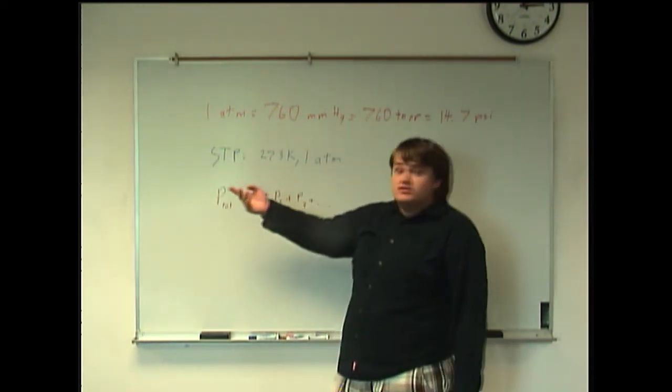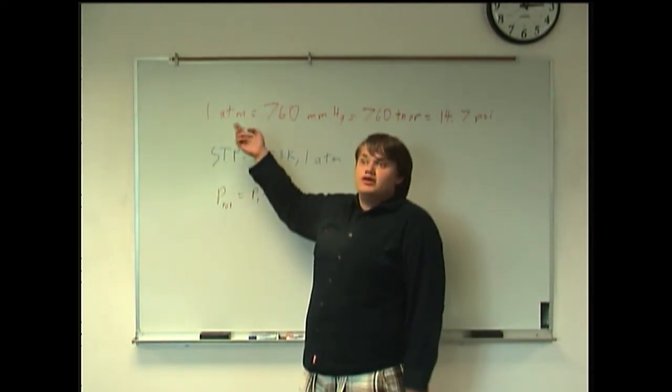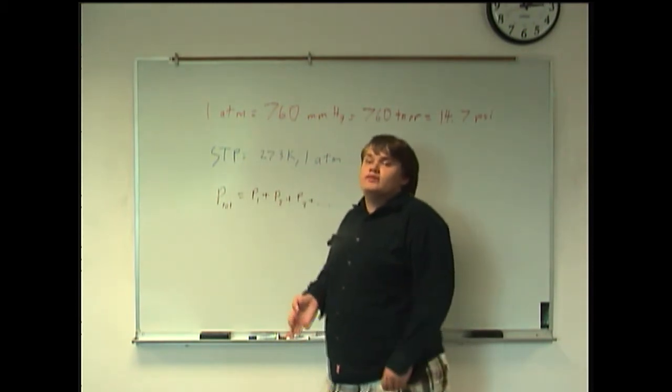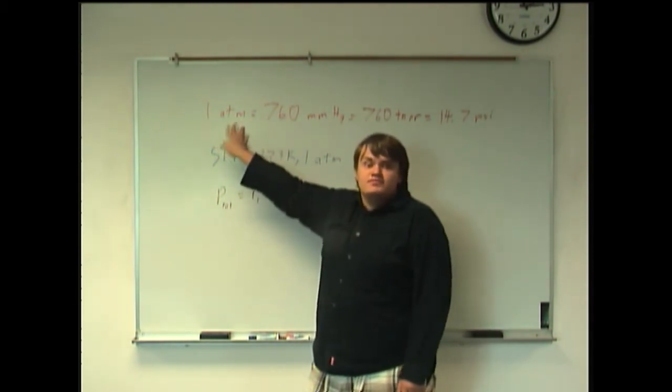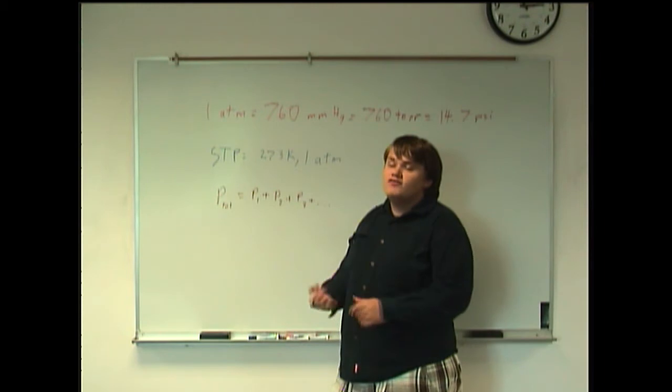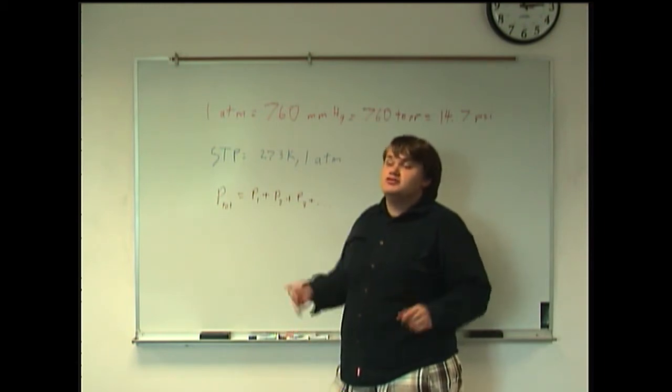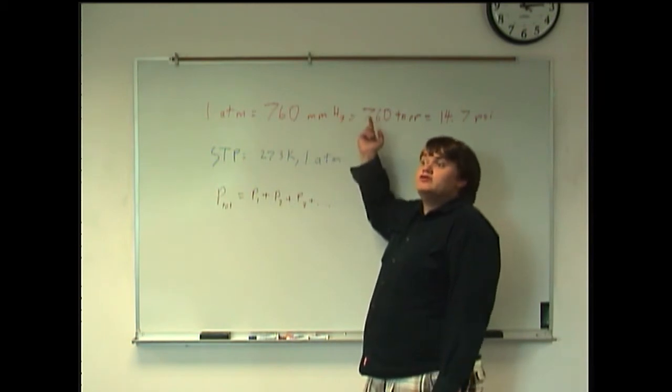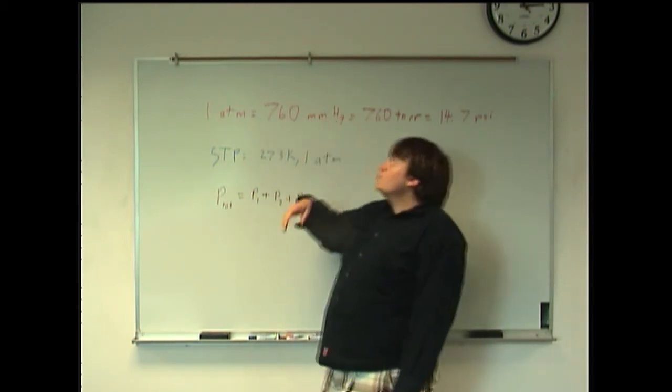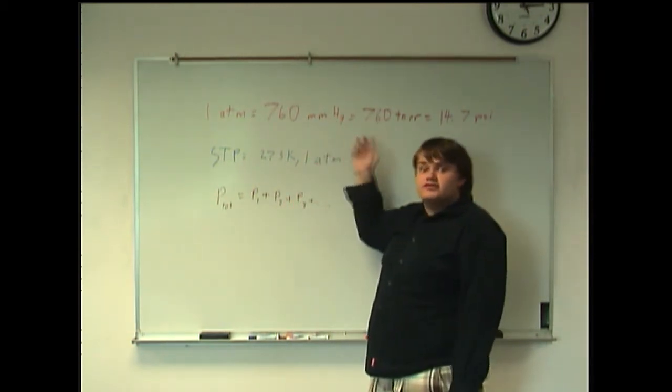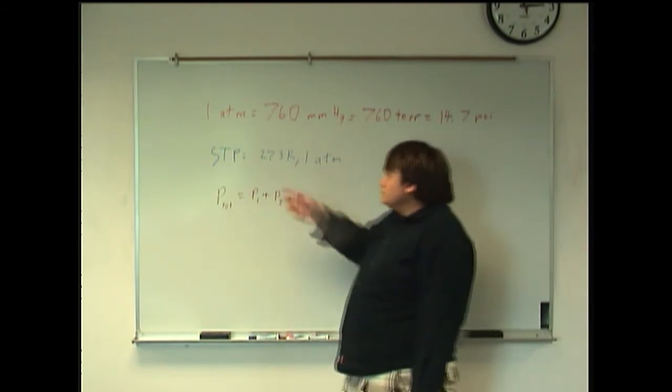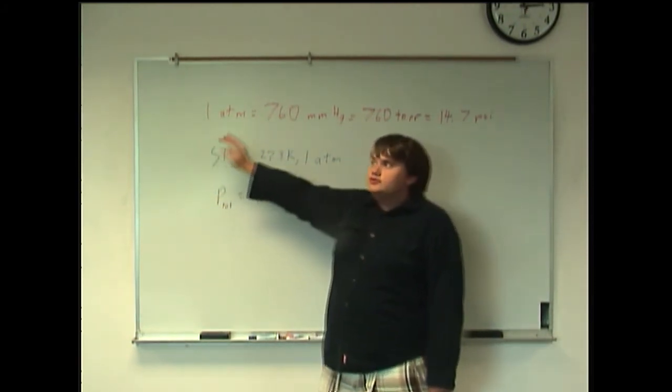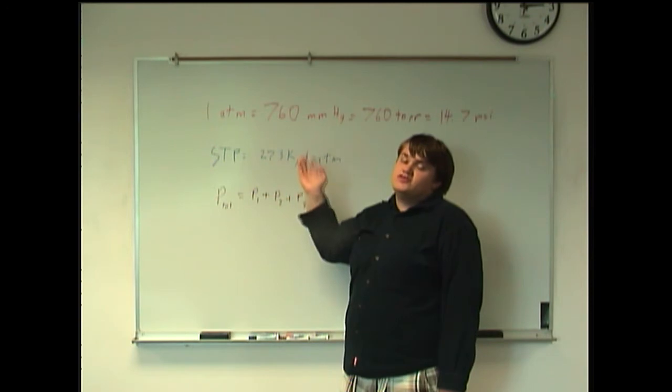So first I'll be talking about the different units of pressure. You may of course know about the atmosphere, the ATM, but often you'll find that pressure is measured in different units. One might be the millimeter of mercury, or mmHg, or also known as the Torr. Now, one atmosphere is equal to 760 millimeters of mercury.